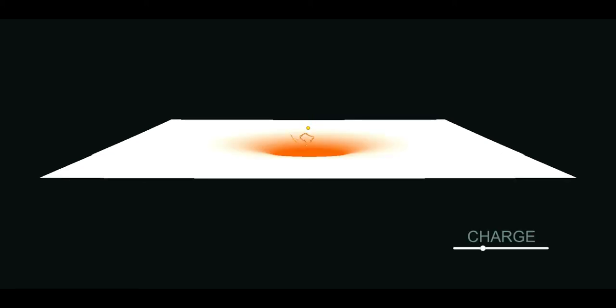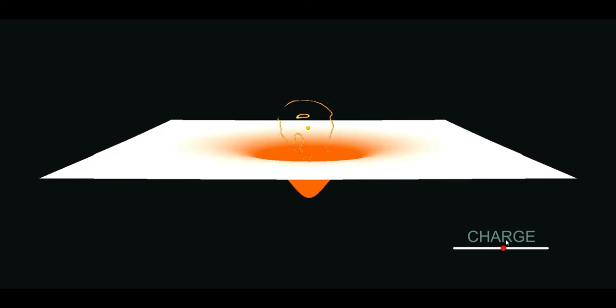Let's insert our friend the electron in this two-dimensional space. Space bends, creating a small hole under the electron. This hole becomes bigger if the electron charge increases and it shrinks if the charge decreases.